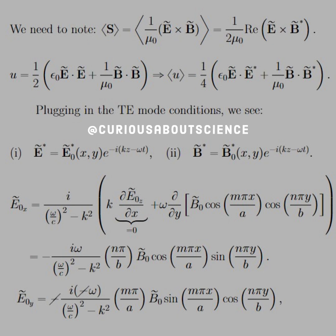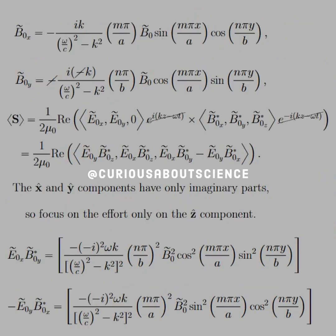Then we see the same thing for E naught Y, things cancel, and then negative signs cancel. B naught X and B naught Y accordingly.